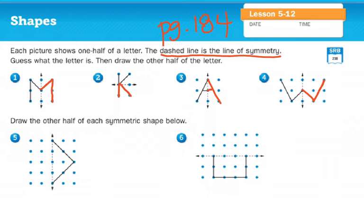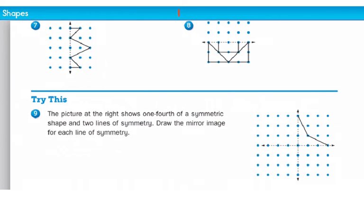Now we're going to draw the other half of each symmetric shape below. Use the dots to help you draw it. How about number six? Count how many dots it goes up and how many it goes across. We're going to continue on page 184. I'm just going to move mine down.